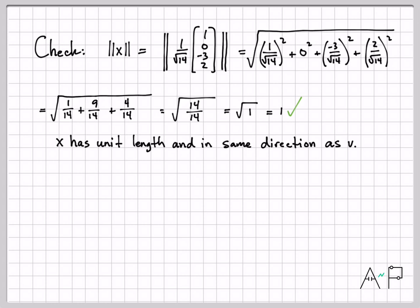This happens for any vector. We showed that x for this particular case has length 1, but any time you create a vector by taking the vector and dividing by its norm, you're going to end up with a unit length vector. Norms are very handy for that.